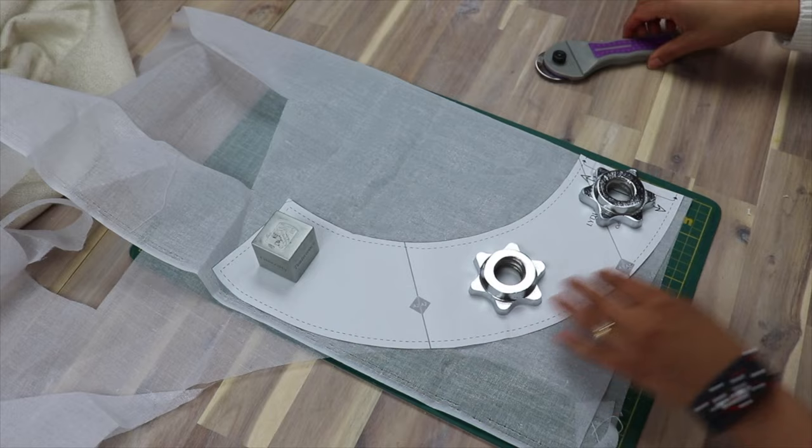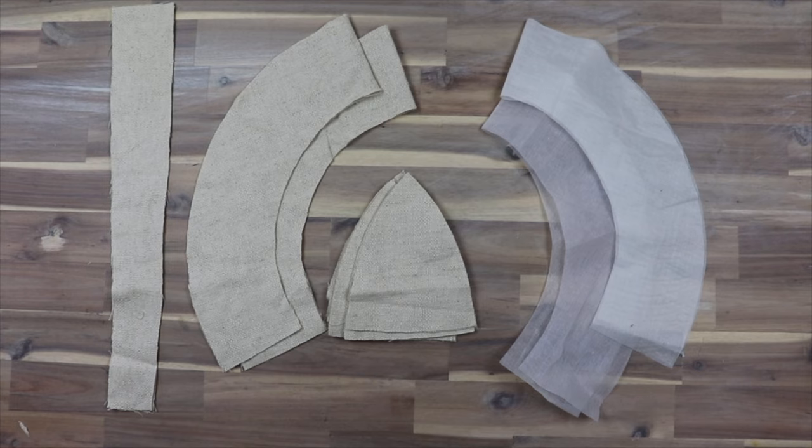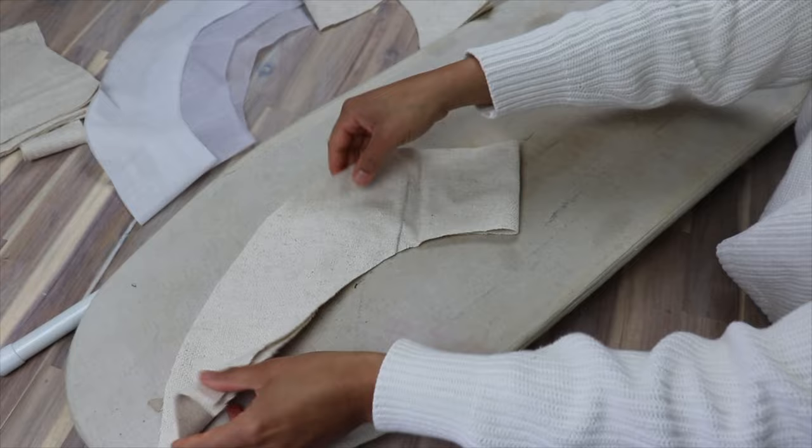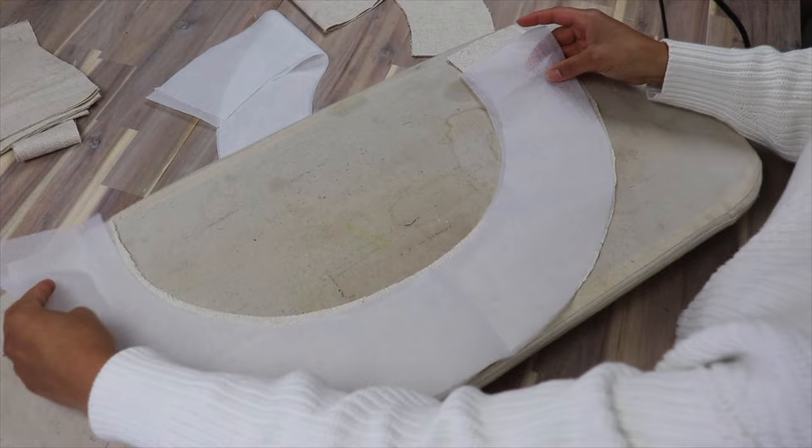I also cut two pieces of fusible interfacing. And now it's time to sew. First, apply your fusible interfacing or whatever you're going to use to stiffen it to both hat brim pieces.